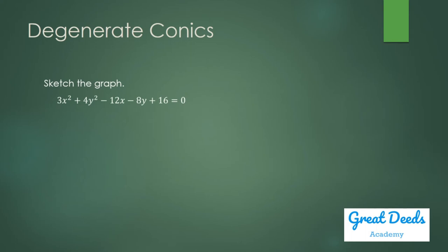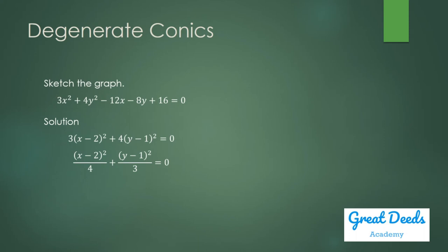Let us sketch the graph of this equation. From the looks of it, this will give us an ellipse, because the operation between the quadratic terms is addition and their coefficients are not equal. Let us write it in standard form by completing the square. Writing this in standard form and dividing both sides by 12, we get an expression equal to zero. That can only happen when x equals 2 and y equals 1. So this is the set of coordinates for a point at (2, 1). This is an example of a degenerate case of an ellipse.